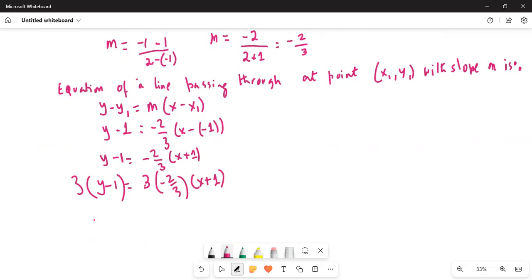Okay, so I'll distribute the 3 here. So it's 3y minus 3 equals - this 3 and this 3 cancel - so you have -2 times (x plus 1).